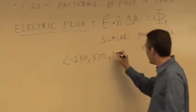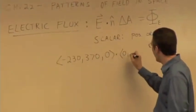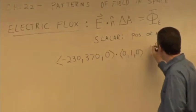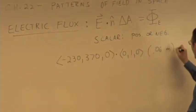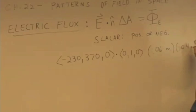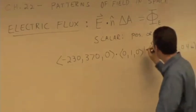Negative 230, 370, zero dotted with zero, one, zero times an area of 0.06 meters times 0.04 meters, and this is in units of volts per meter.